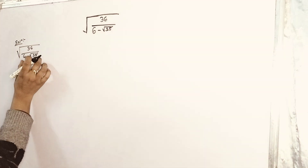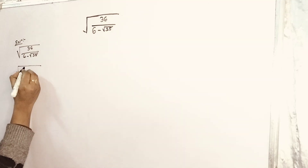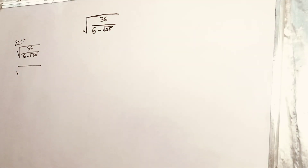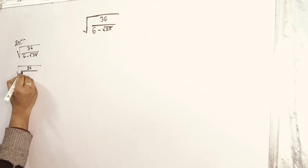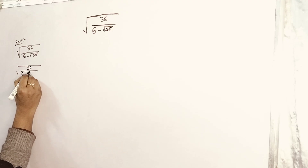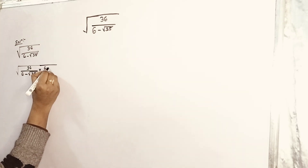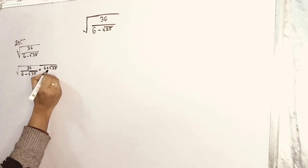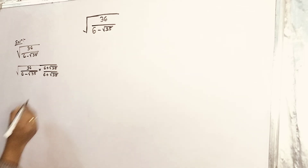Firstly, what we will do — we have a root in the denominator. Generally, in any equation when there is a square root or any root in the denominator, we rationalize it so that we can remove the root. So this is 36 divided by (6 minus root under 35), and while doing rationalization, you take all the terms the same but change the sign of the expression.